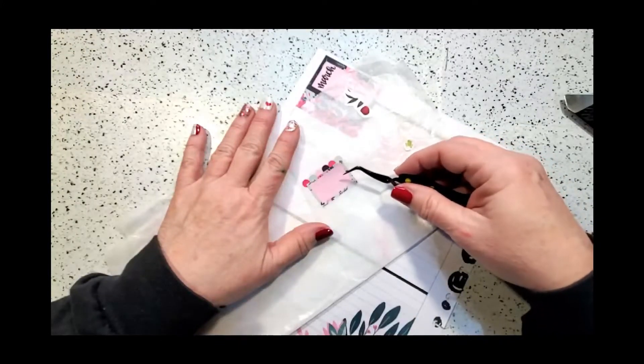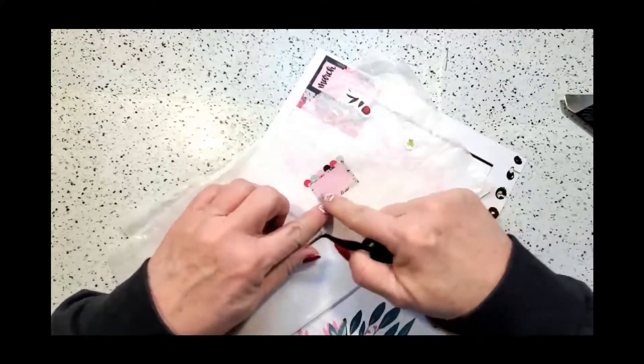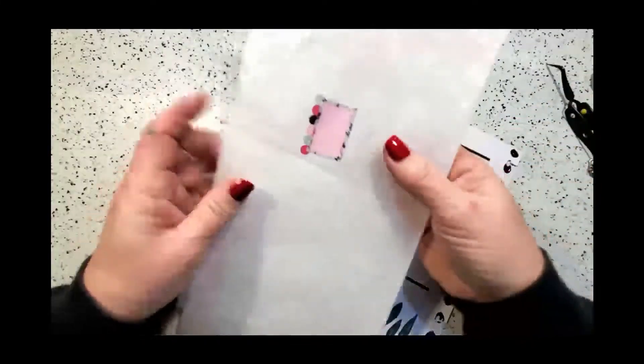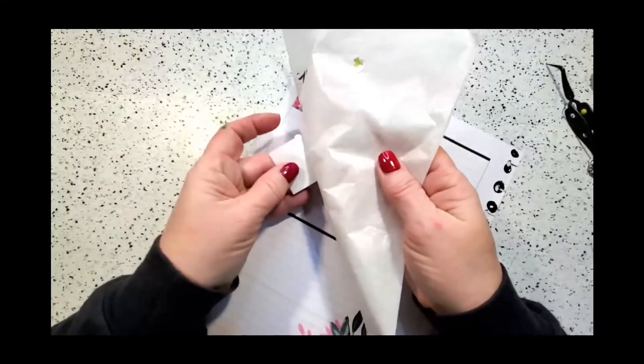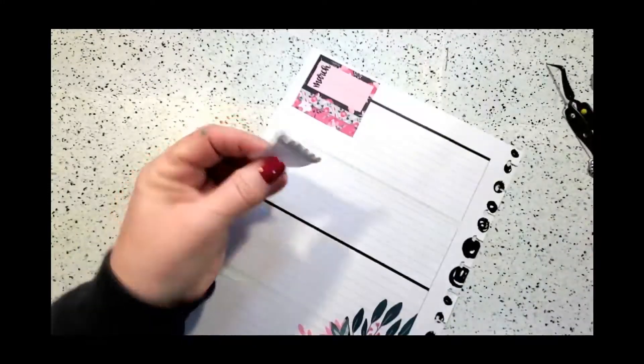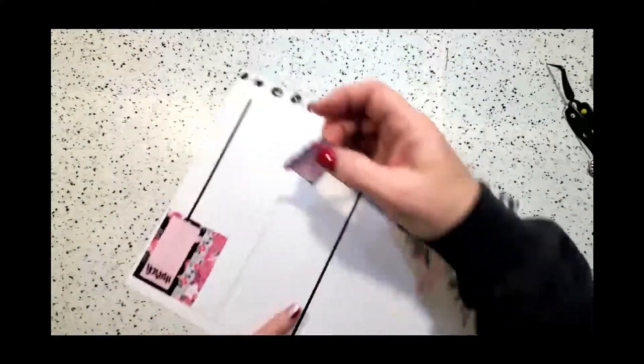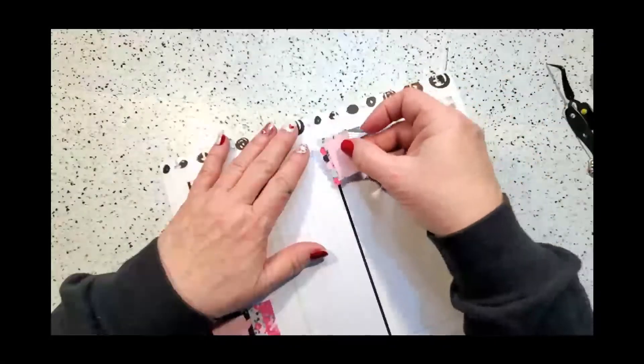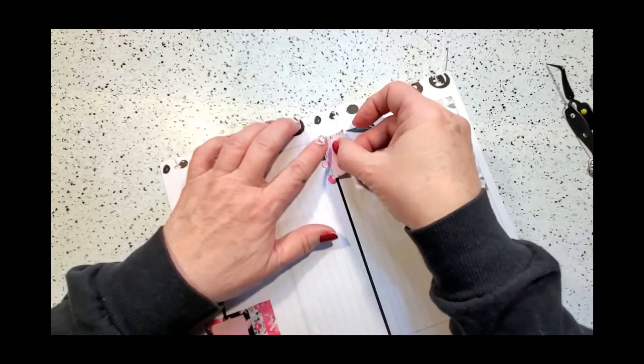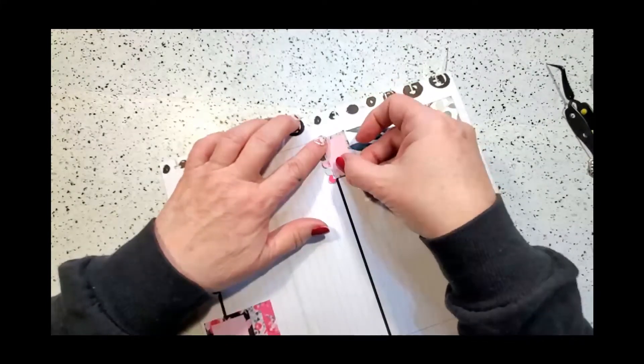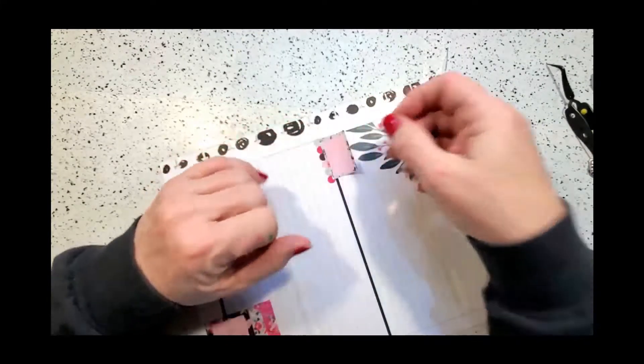Now all I do is peel it off from the back and the dots come right off. And in this page, the dots are actually going to go just above the line. This is my notation box for where my Bible verse is.